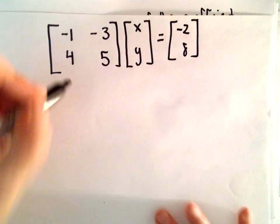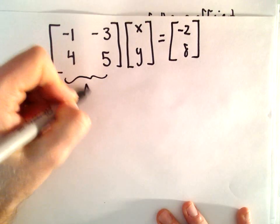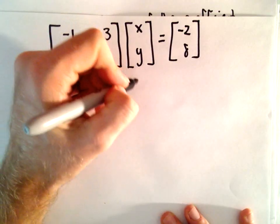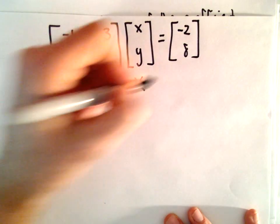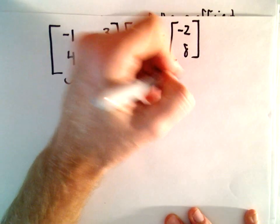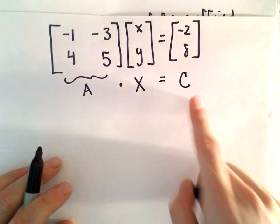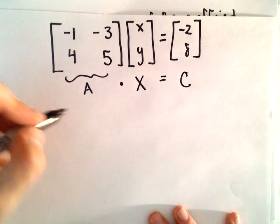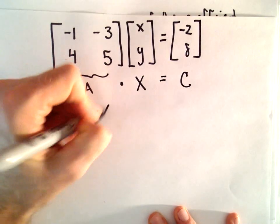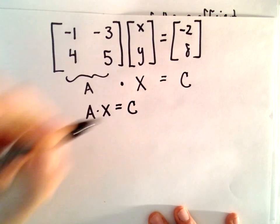So if we call this the matrix A, we can abbreviate our next matrix, we can call it capital X, and that's going to equal matrix C. The idea is we've got this matrix equation, AX equals C.